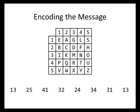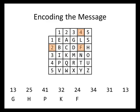Now we've got 8 pairs of numbers and we're going to use our Polybius square again to look up those numbers. The first pair is 1, 3 — row 1, column 3 is the letter G. The next pair is 2, 5 — row 2, column 5 is the letter H. Row 4, column 1 is P; 3, 2 gives us K; 2, 4 gives us F; 3, 4 gives us N; 3, 1 gives us I; and 1, 3 gives us G. So the final encoded message is G-H-P-K-F-N-I-G.